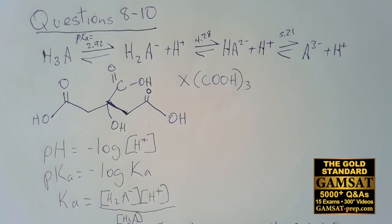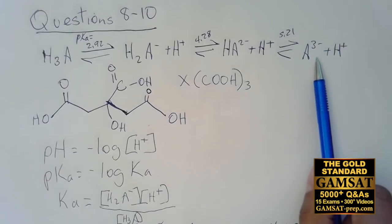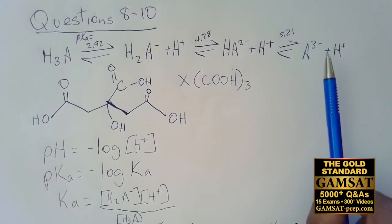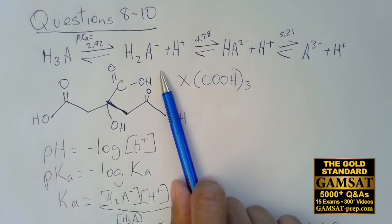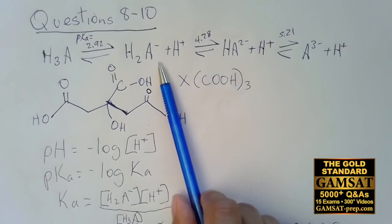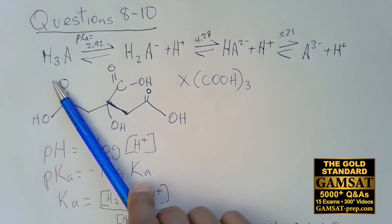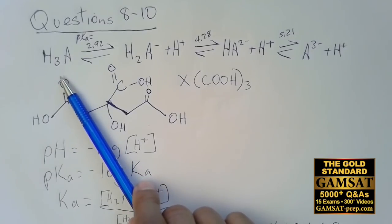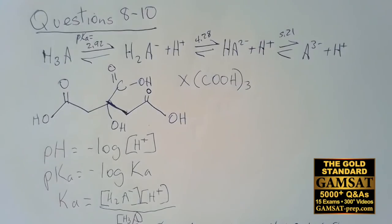Answer choice C is correct — it has the minus two charge. Choice D had minus three, which would be correct if the pH were 6. If the pH were 4, choice B would be predominant. If the pH were around 1 to 2.5, choice A would be dominant — the fully protonated form, meaning all anionic components have been protonated.